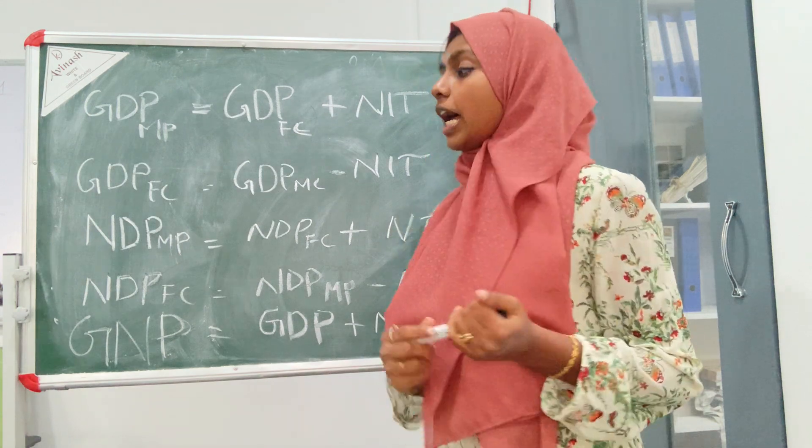GDP deflator is also an important concept. It is calculated as nominal GDP divided by real GDP, then multiplied by 100. GDP deflator helps us measure the value of our money and indicates price level changes over time.